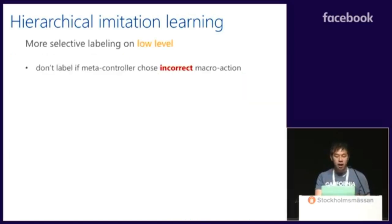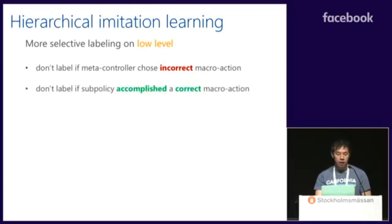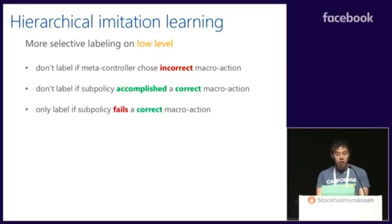To learn efficiently, our key strategy is to be selective when asking for teacher feedback at the low level. First, if the metacontroller chooses the wrong macro action, no low-level feedback is needed. Second, neither do we need low-level feedback if the sub-policy can successfully execute a correct macro action. We only ask for low-level feedback when the sub-policy fails to execute a correct macro action chosen by the metacontroller. These are the principles crucial for improvement over flat imitation learning.